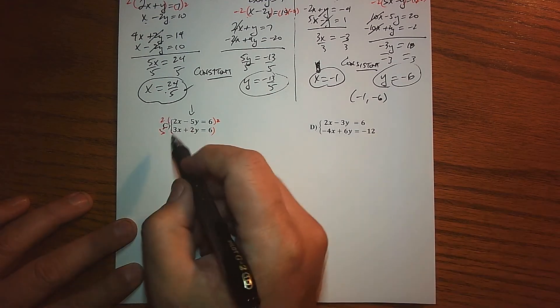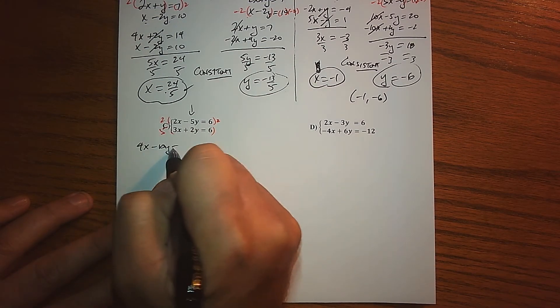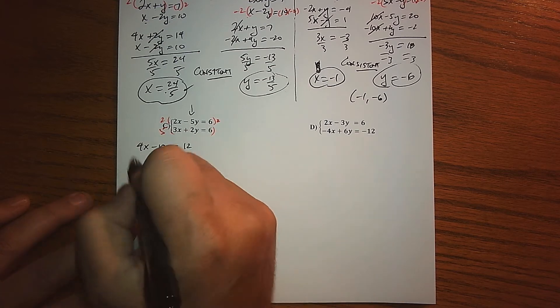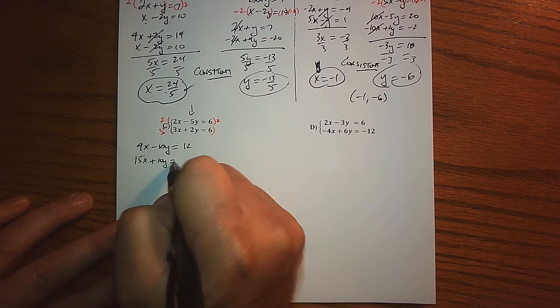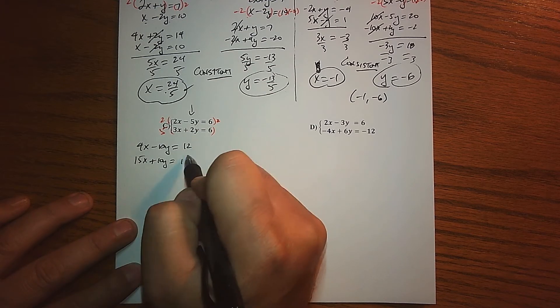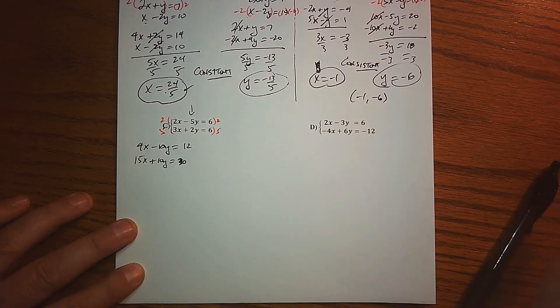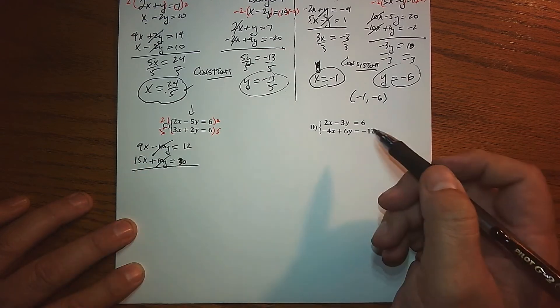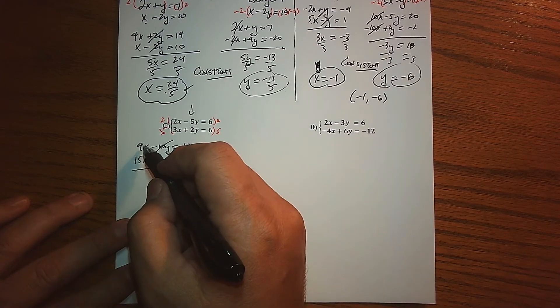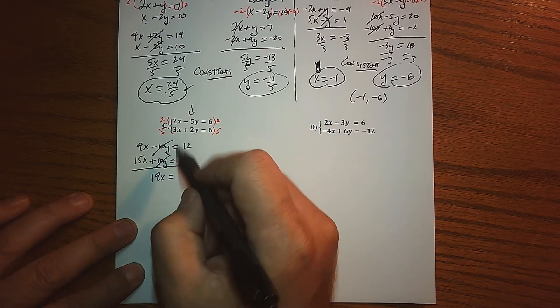Easy fix: we'll multiply that top equation by 2 and multiply that bottom equation by 5. That creates the new situation: we get 4x minus 10y equals 12, and we get 15x plus 10y equals 30. Actually, sorry about that—we're multiplying this side by 5 as well.